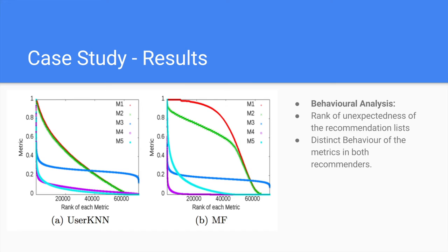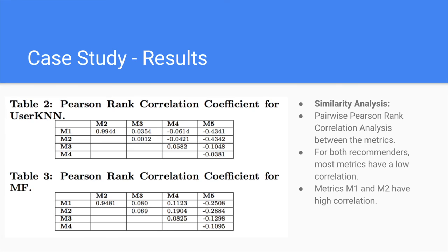For the sake of comparison, we normalize the results. As we can see, regardless of the recommender used, the metrics have different behaviors. Metrics 1 and 2, proposed by Gao and Adamopoulos respectively, have the same behavior because their implementations are similar to each other. The remaining metrics evaluate unexpectedness differently, as is clearly seen. Both recommenders show different behaviors for the unexpectedness scores. Therefore, this clearly shows that the metrics have distinct behavior and they might not be agreeing with each other, independently of the recommender used.